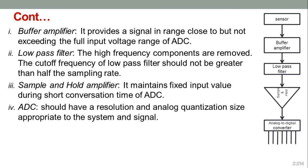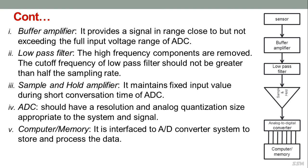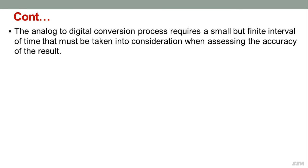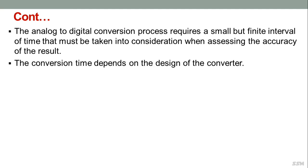The ADC should have a resolution and analog quantizing size appropriate to the system and signal. Its output is fed to a computer or memory, which is interfaced to the ADC to store and process data. The analog to digital conversion process requires a small but finite time interval that must be considered when assessing accuracy. Conversion time depends on the converter design, method used, and speed of electronic components.